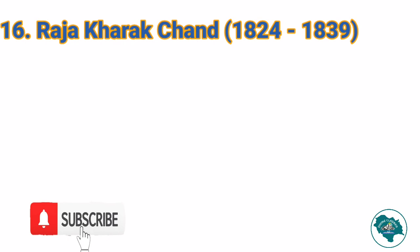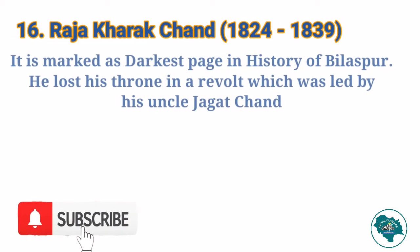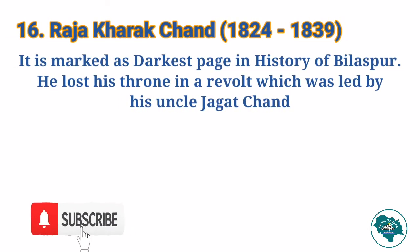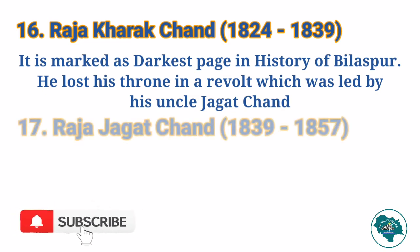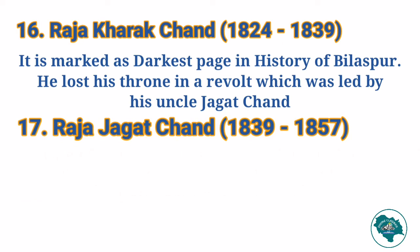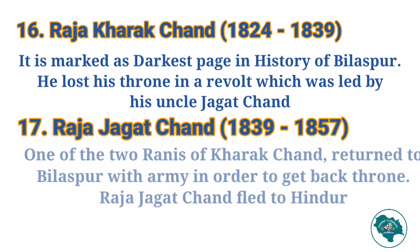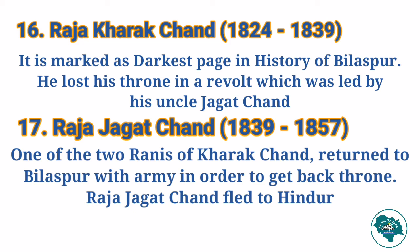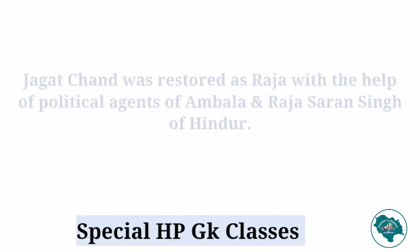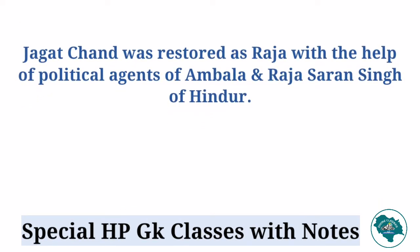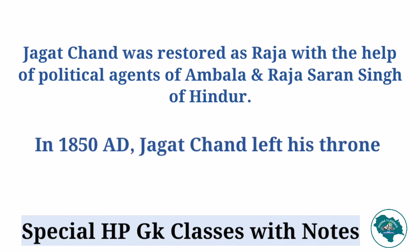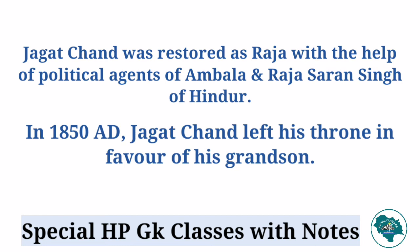After Mahanchand came Raja Kharakchand, who ruled for 15 years and lost his throne in a revolt led by his uncle Jagachand. Then came Raja Jagachand from 1839 to 1857. One of the two Ranis of Kharakchand returned to Bilaspur from Sirmaur with an army to reclaim the throne, and Raja Jagachand fled to Hindur. Later he was restored as Raja with the help of political agents of Ambala and Raja Ram Saran Singh of Hindur. In 1850, Raja Jagachand left his throne in favor of his grandson.